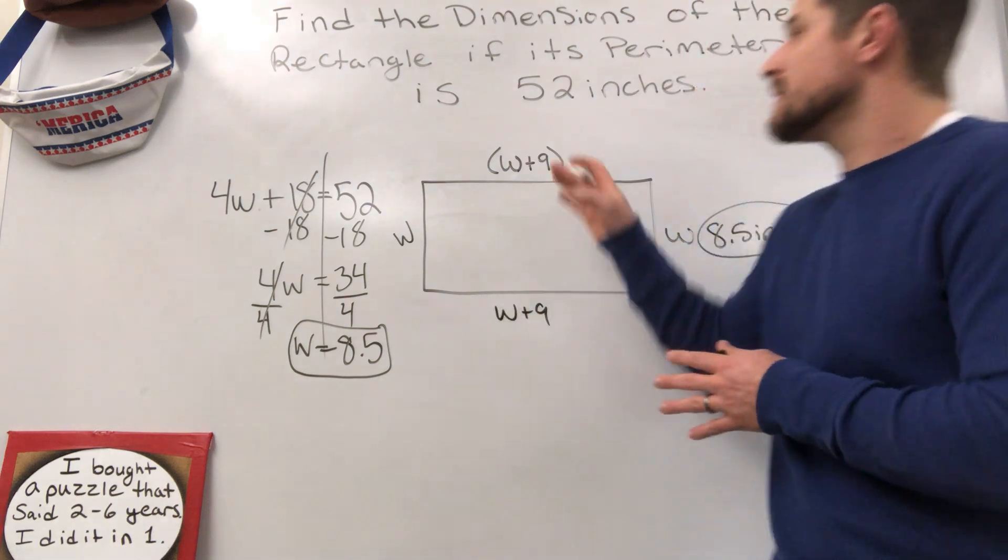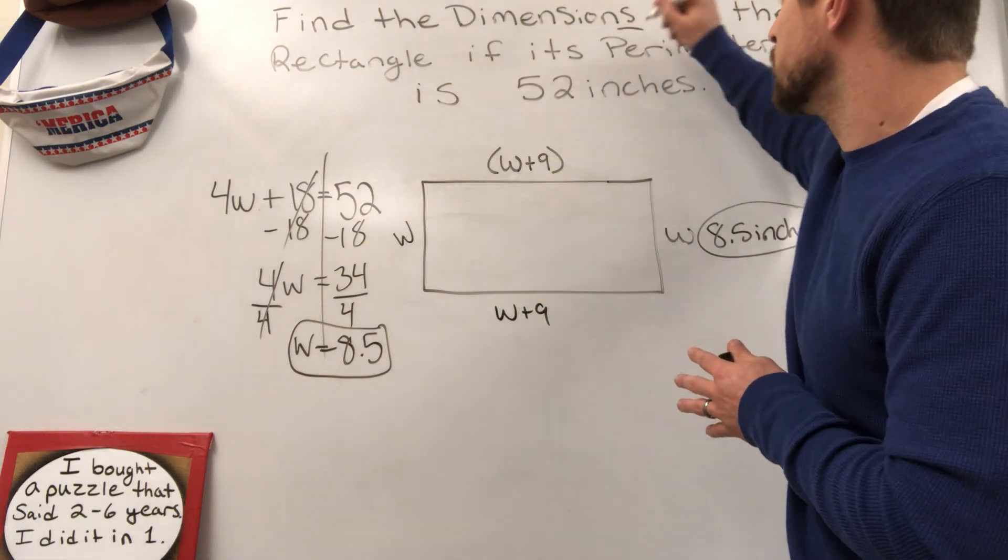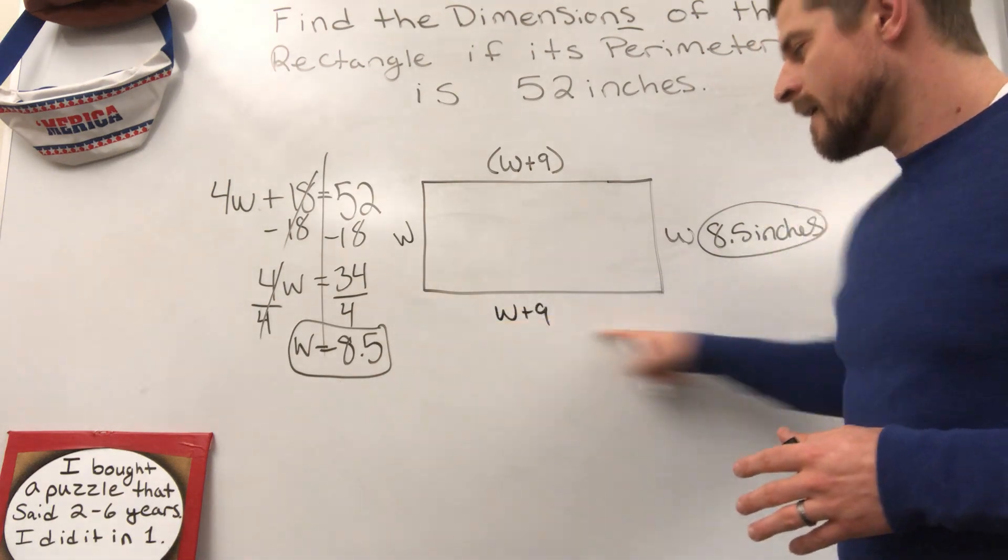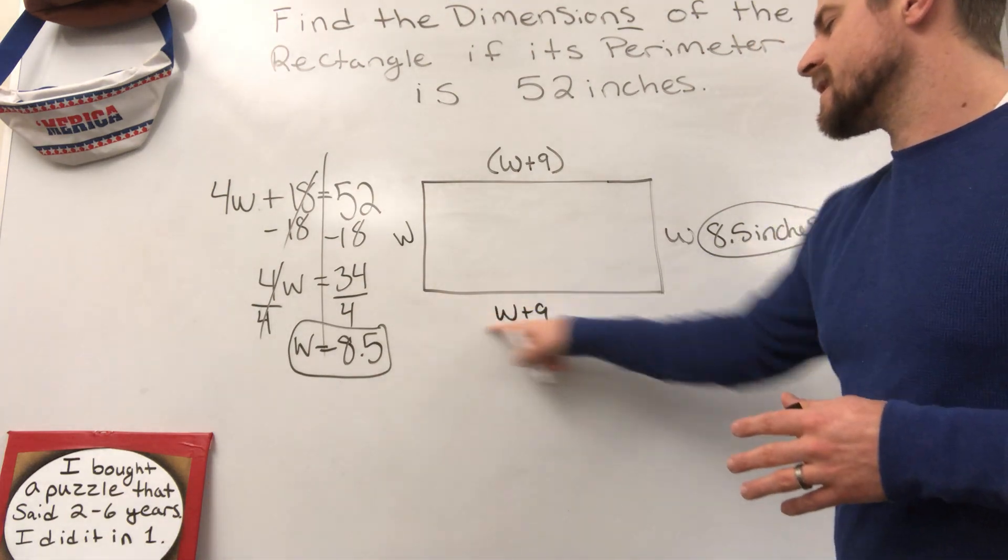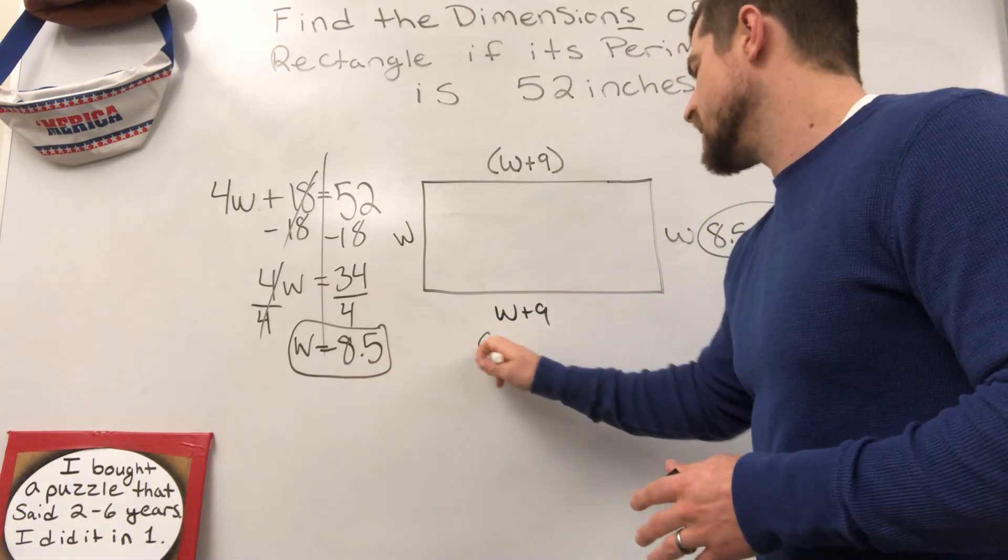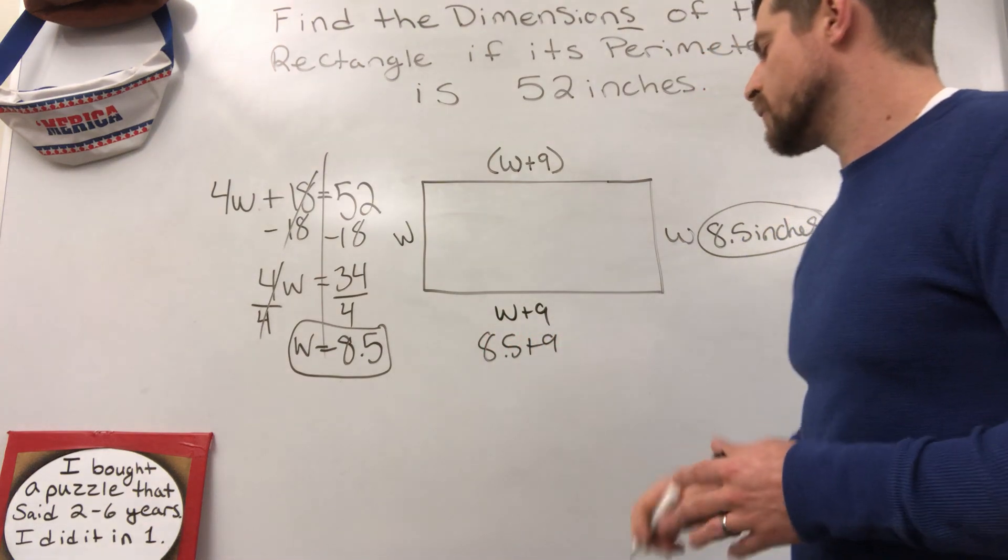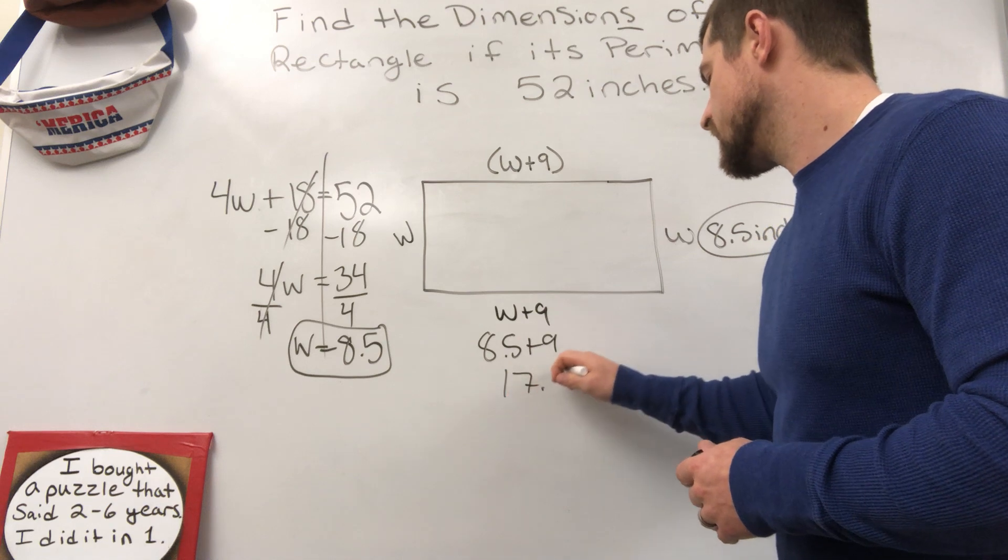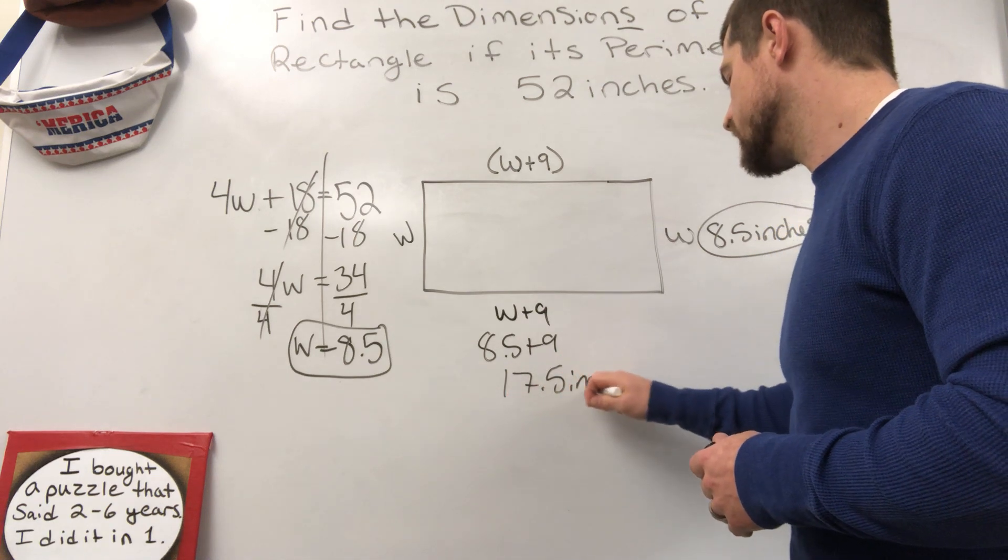No, you're not. You need the dimensions. Plural dimensions. I need to know what this side length is. And that is W plus 9, meaning the value of W, 8.5 plus 9 for a grand total of 17 and a half inches.